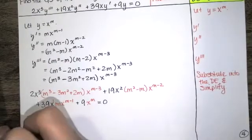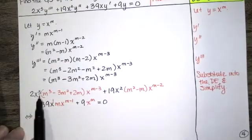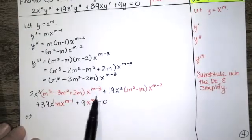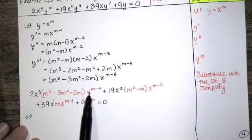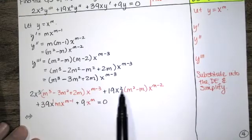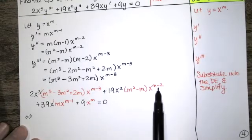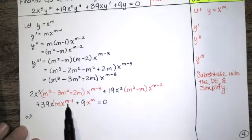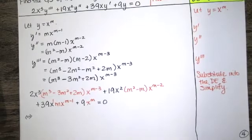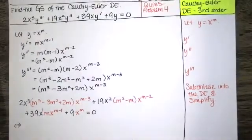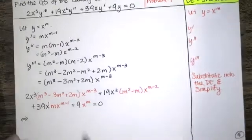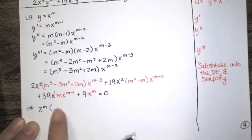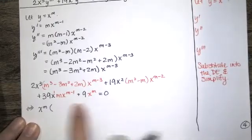Notice that you've got an x cubed and an x to the m minus 3 — when you multiply those together you add the exponents, giving x to the m. The same happens with x squared times x to the m minus 2, and likewise for the other terms. That's a consequence of this being a Cauchy-Euler differential equation. So we can factor out x to the m, and then we'll see a polynomial in m.